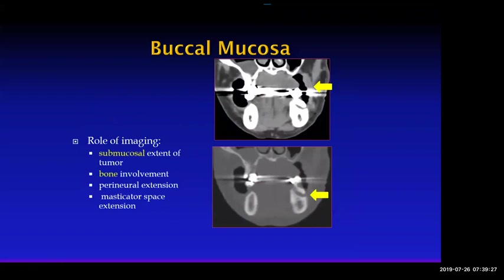Here's another buccal mucosal cancer — on the puff cheek technique on the left you can nicely appreciate the involvement of the bone, which makes it a more locally advanced T4 cancer. These are the kind of questions you have to answer for your surgeon.